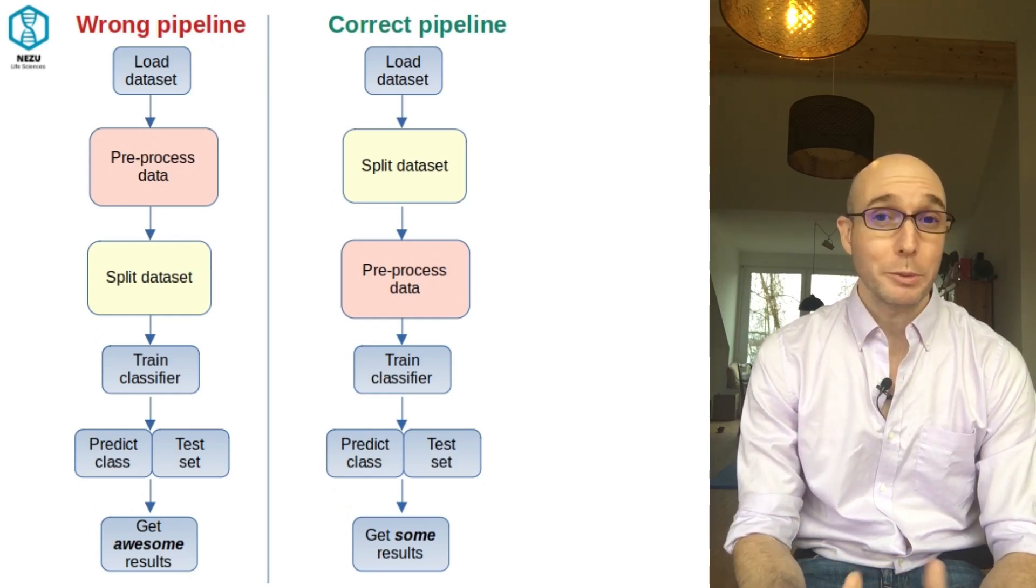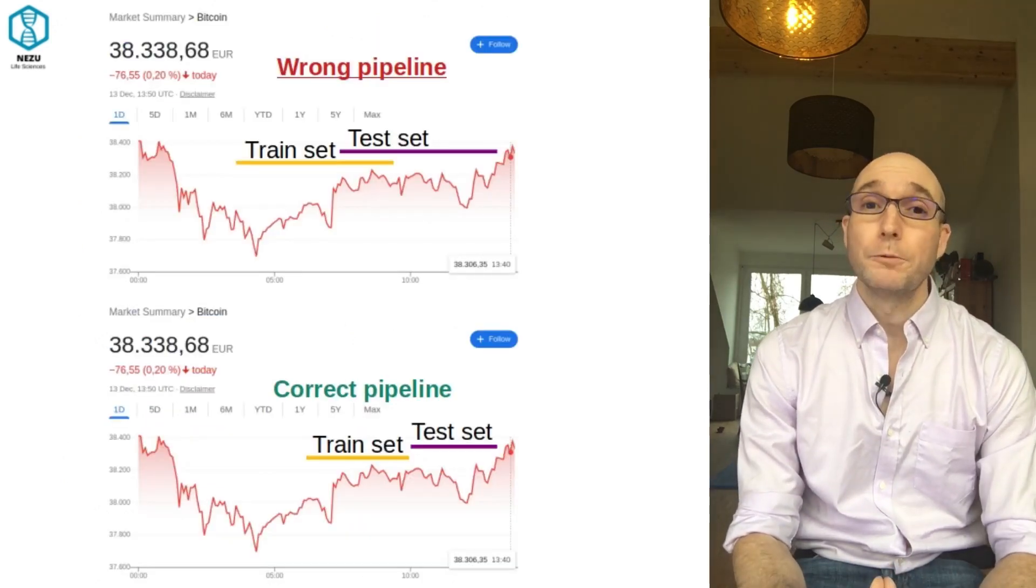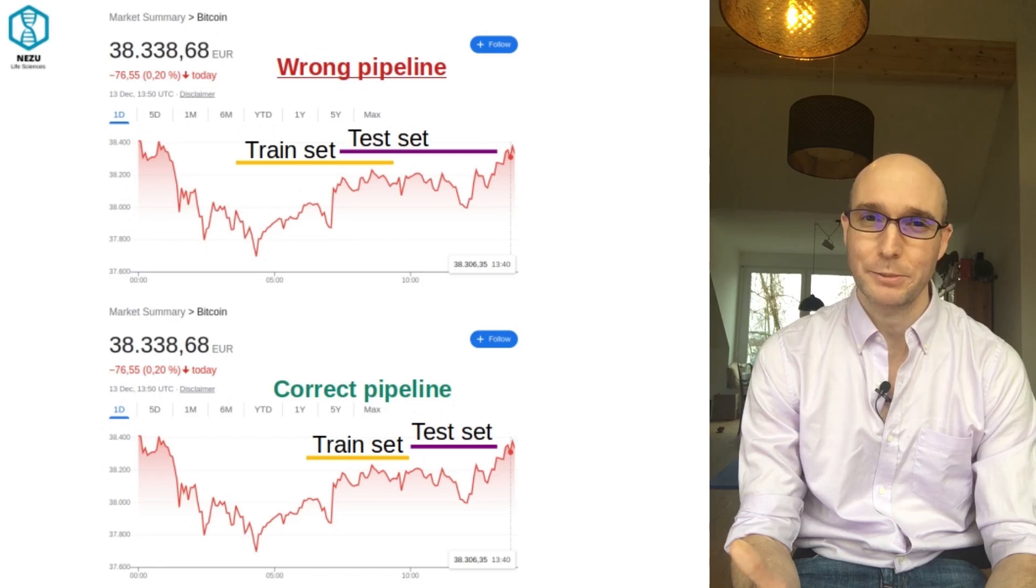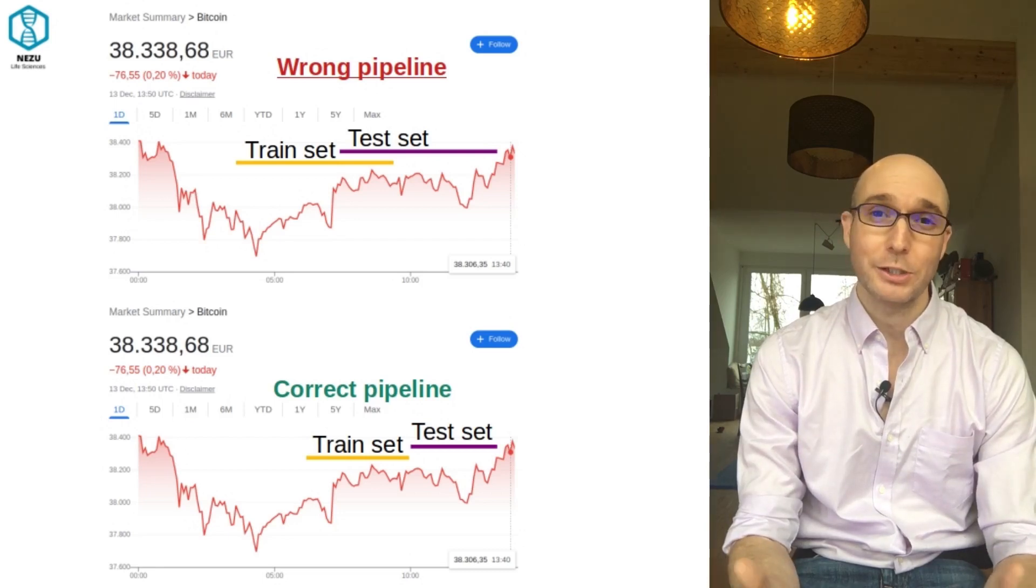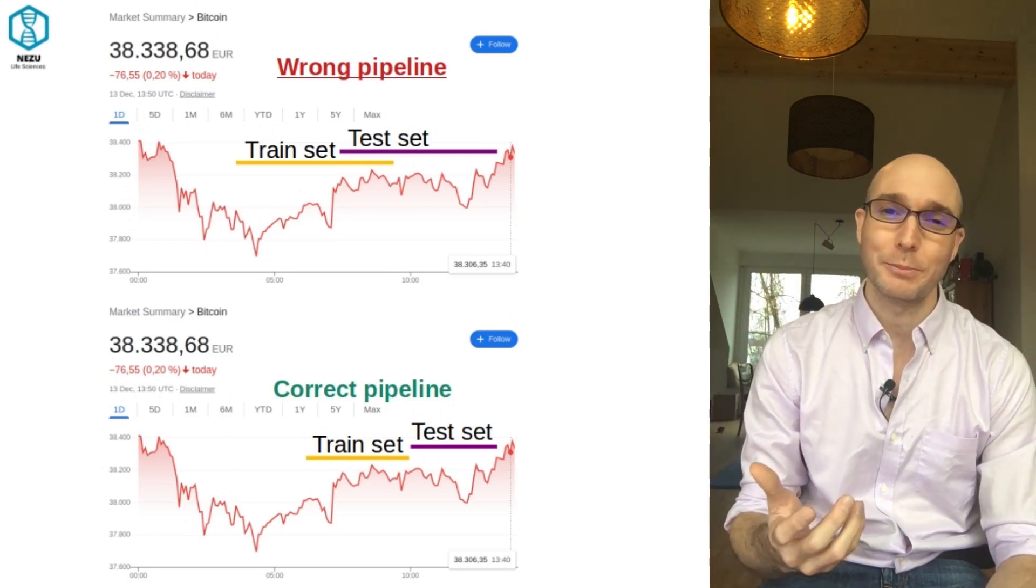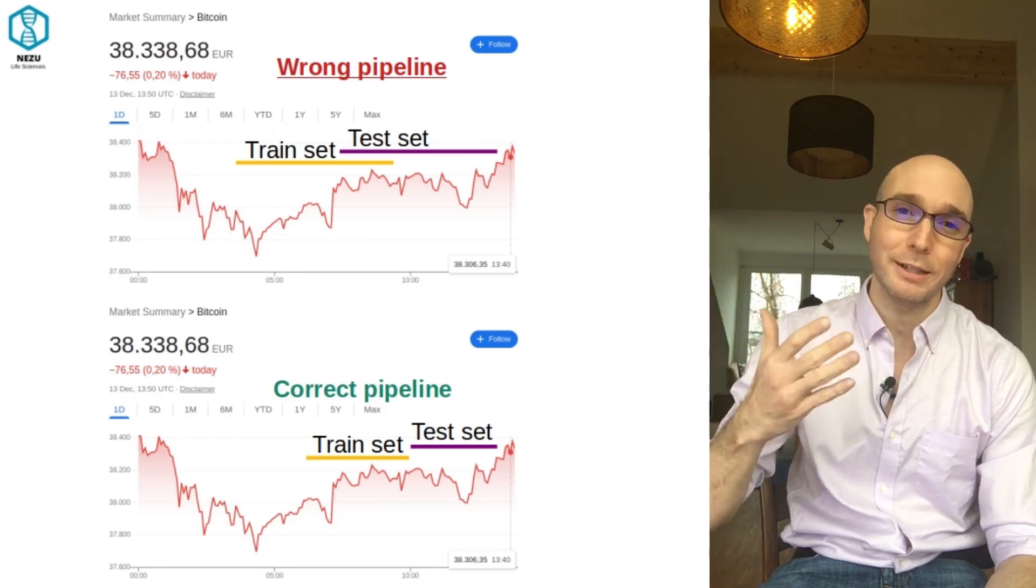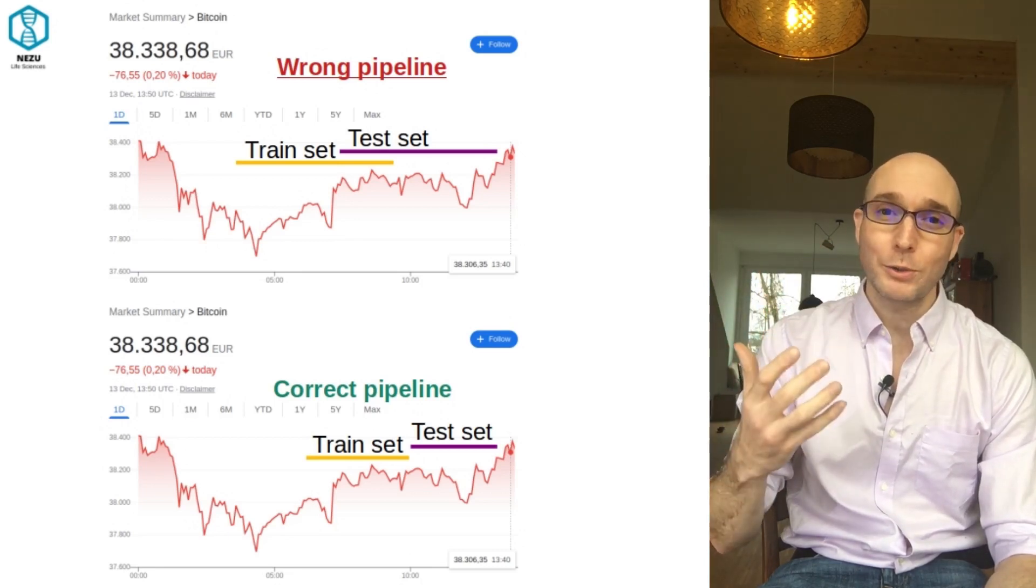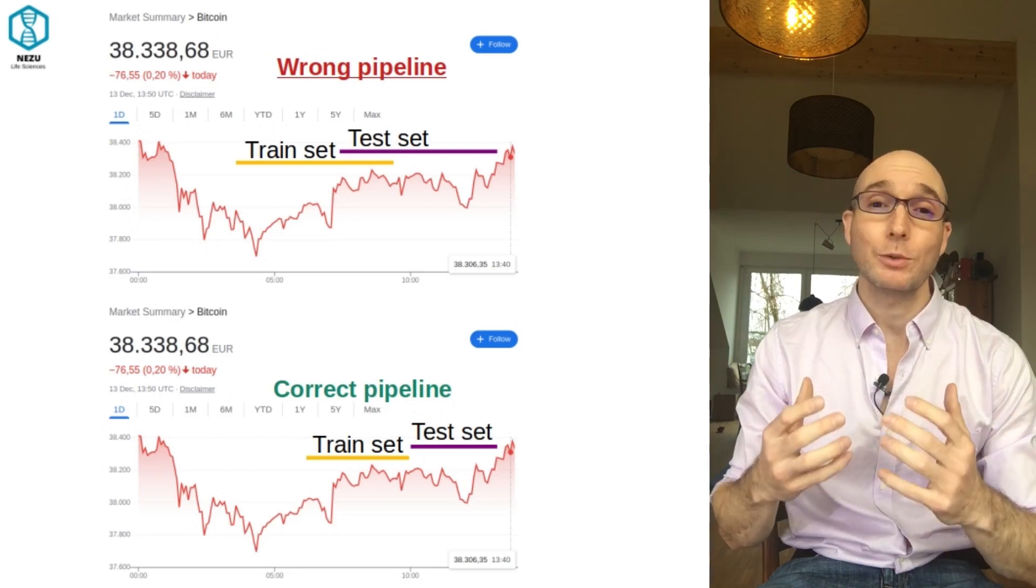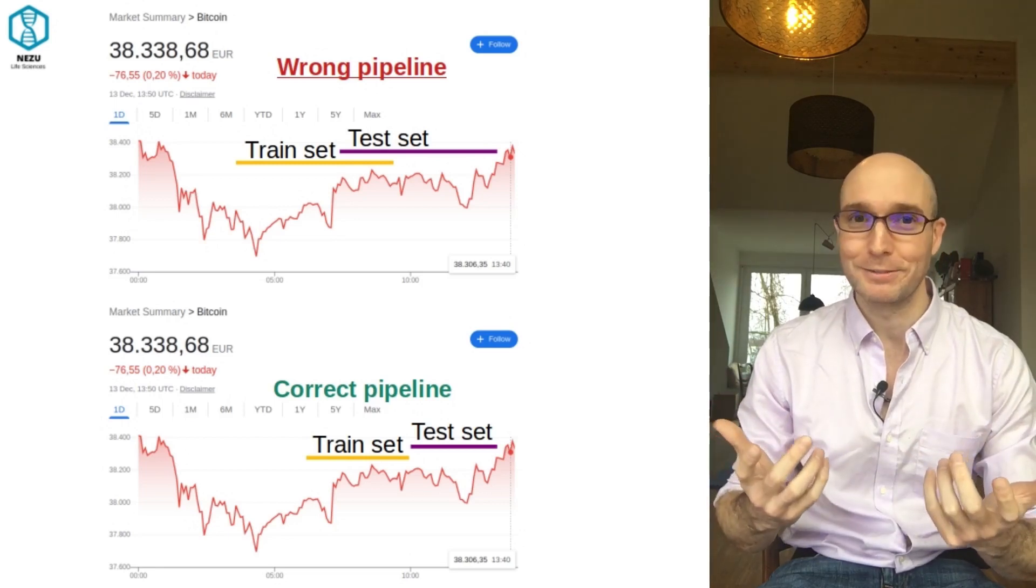Second: future information leakage in time series data. In models dealing with time series data, like stock market prediction or weather forecasting, using future data at the time of training is data leakage. For example, if your features in your model have data points that come from the future relative to the point in time being predicted, the model is being trained with information it doesn't have in a real world scenario. It's like trying to predict the weather from yesterday - of course you're gonna get it right, but it's wrong.